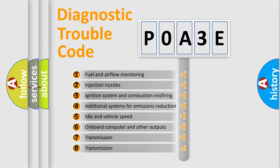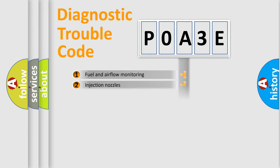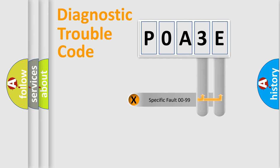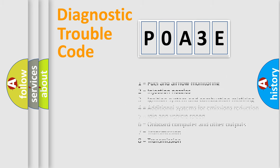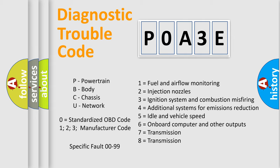The distribution shown is valid only for the standardized DTC code. Only the last two characters define the specific fault of the group. Let's not forget that such a division is valid only if the second character code is expressed by the number zero.